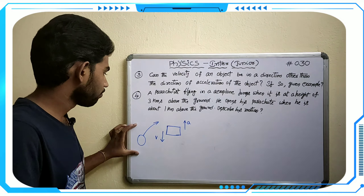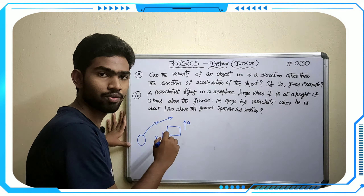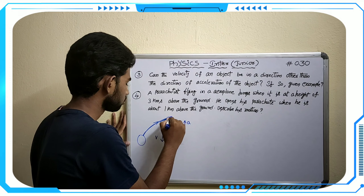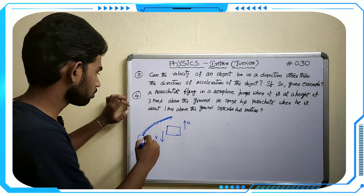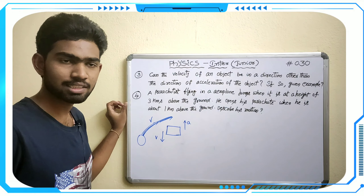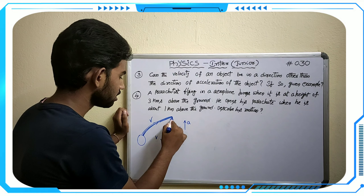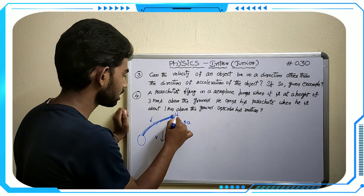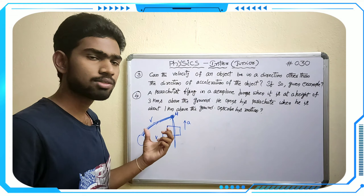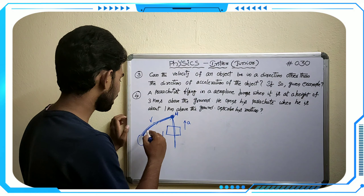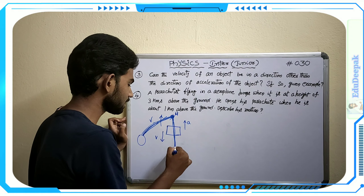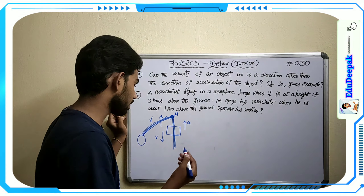When the object is thrown upward, as it reaches maximum height, the velocity keeps changing direction while acceleration due to gravity always acts downward. At maximum height, the velocity is upward and acceleration due to gravity is downward — these are in opposite directions.